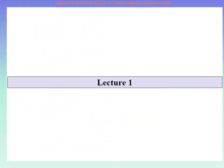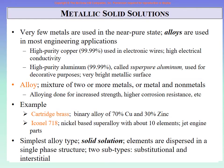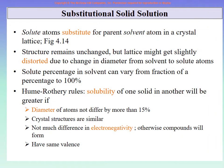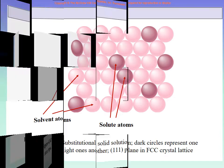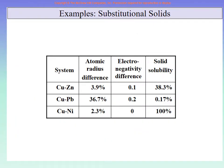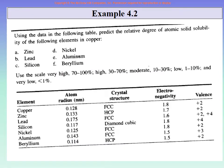Let us review what we covered last time. We talked about metallic solid solutions and alloys — what is an alloy, what is a solid solution, substitutional solid solution, solubility, electronegativity, the Hume-Rothery rule, more about solvent and solute atoms, and an example on substitutional solid solution including how to find percent solubility.